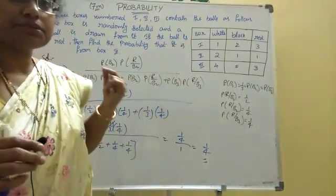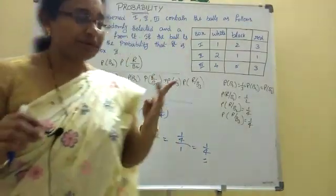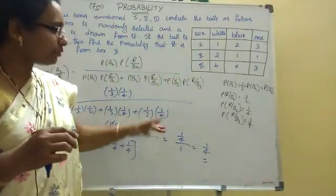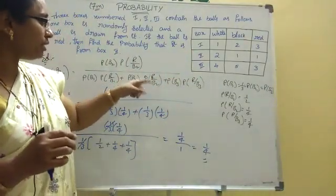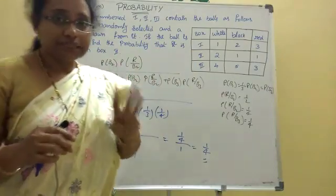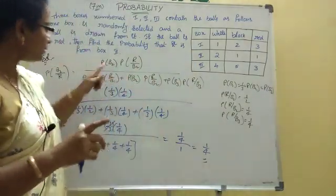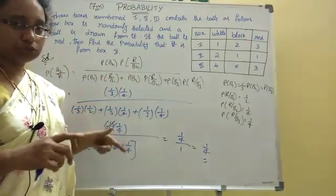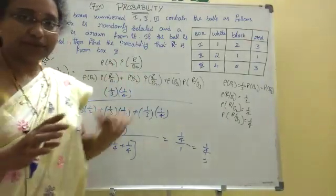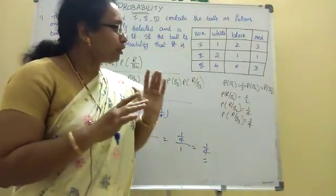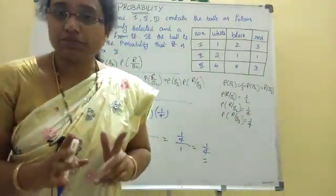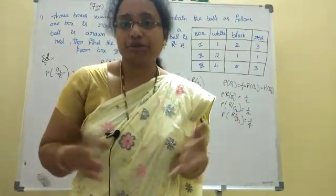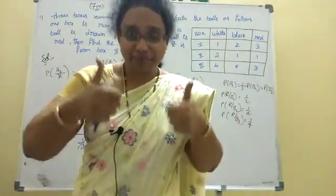We have 3-mark models and 4-mark models — the same type of model. This 7-mark question on probability is very important. You have to prepare it. Thank you, and share with your friends — they will also benefit. Please like my channel.